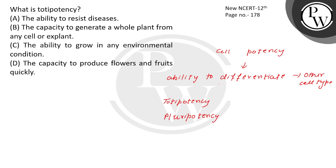Pluripotency refers to stem cells which have the potential to differentiate into any of the 3 germ layers: ectoderm, mesoderm, and endoderm.